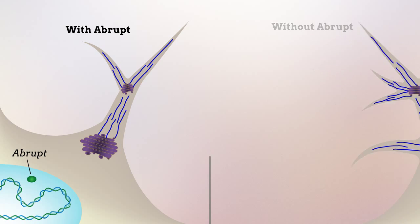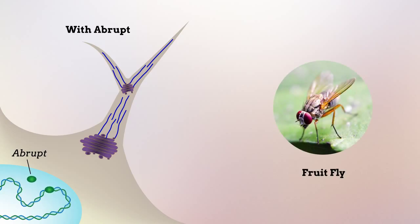In fruit fly neurons, abrupt induces the production of microtubule-related proteins, in particular centrosomin, the same protein that helps cells to properly separate their chromosomes during cell division.